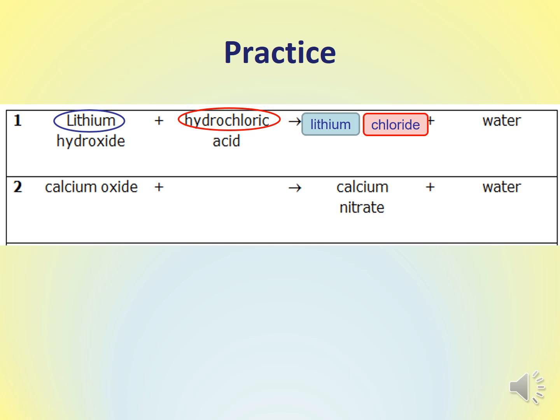Everything to do with the acid is highlighted in red and everything to do with the alkali is highlighted in blue, matching the colours from the pH scale. For the second example we are working backwards. We've got the alkali calcium oxide, and the metal calcium tells us the salt starts with calcium — calcium nitrate. The second part of the salt's name, nitrate, comes from the acid, so we need to work backwards and remember what type of acid makes salts with nitrate in the name. It is nitric acid. Notice the spelling change: nitric acid gives a nitrate salt.